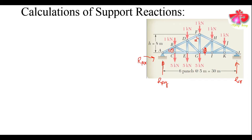Now we will find out the support reactions in the given truss. We are having a pin support and a roller support. We all know that in the pin support there are two reactions, so we assume the reactions at the pin support as shown in the figure.